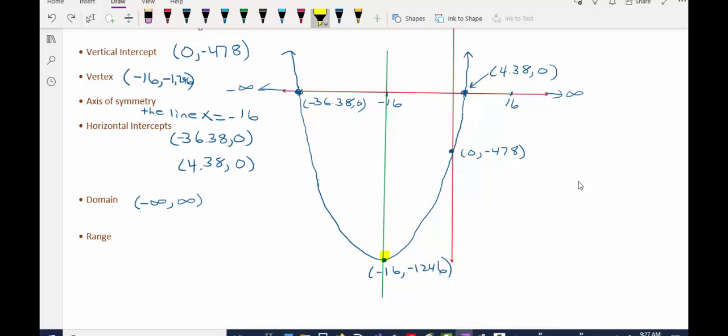Notice that this is the lowest point on the graph and it has a y value of negative 1,246. So in interval notation we always put the lowest number first which is negative 1,246, that's the lowest y value that I can get, comma, the largest y value I can get.